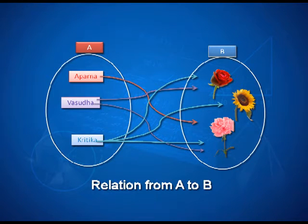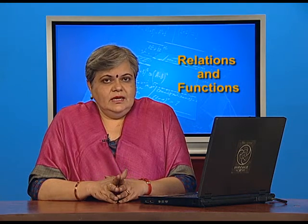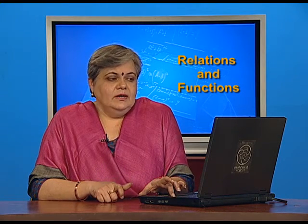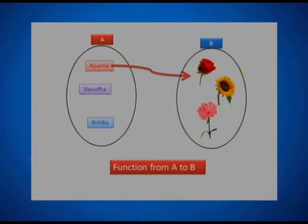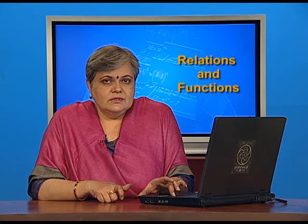Today's lesson is about when does a relation become a function? A relation becomes a function when every element of the set A is related to, is associated to, is mapped to one and only one element of set B. So Aparna likes rose, Varsudan likes carnation, Kritika also likes carnation — that is allowed. One and only one flower from the set B is related to each person. So Aparna cannot like two flowers, and such a relation is called a function.